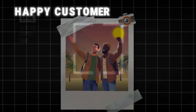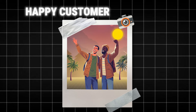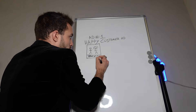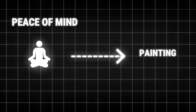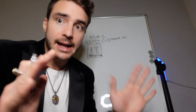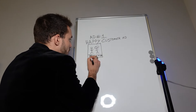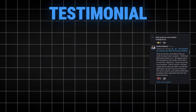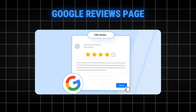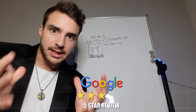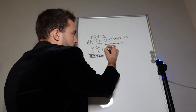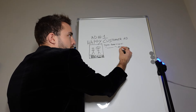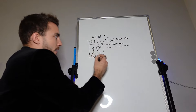The Happy Customer Ad is just a picture of a happy customer, or maybe it's you with a happy customer. You put a banner on it that says 'peace of mind' plus whatever industry you're in — peace of mind plumbing, peace of mind painting, peace of mind real estate — and then you put however many customers you've worked with, like '20,000+ happy customers.' The copy for this ad is a testimonial — just go to your Google reviews page, pick a review that represents you well, and use that. Put it in quotation marks and sign it with the person's name and last initial.